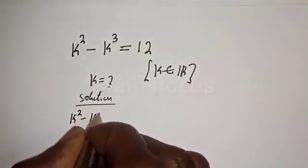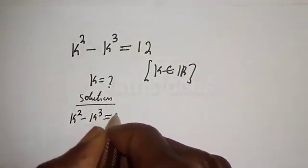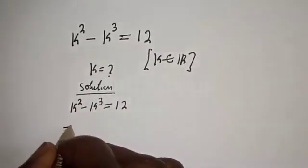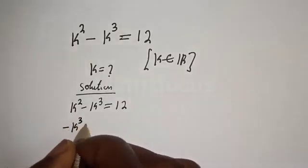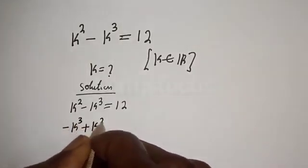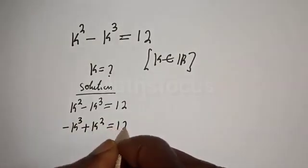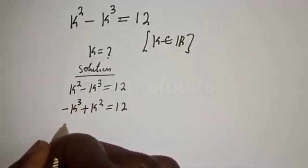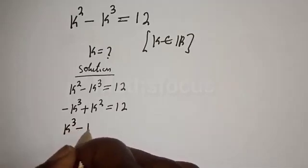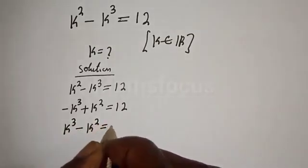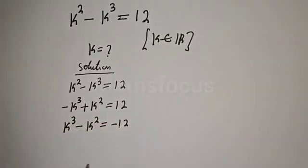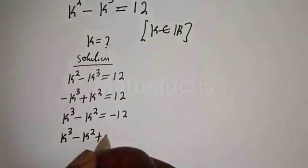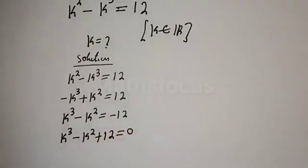k squared minus k raised to power 3 is equal to 12. We can rearrange this: we have minus k raised to power 3 plus k squared is equal to 12. Multiplying all through by minus 1, we get k raised to power 3 minus k squared is equal to minus 12, then k raised to power 3 minus k squared plus 12 is equal to 0.